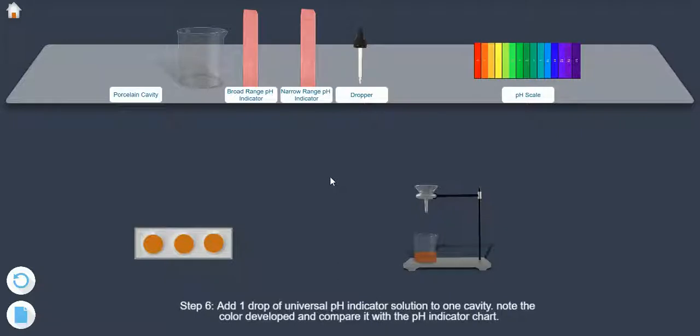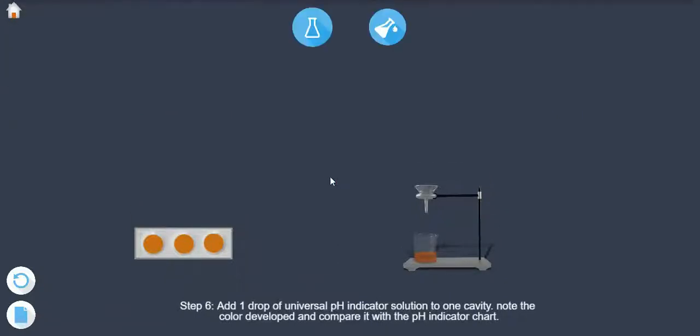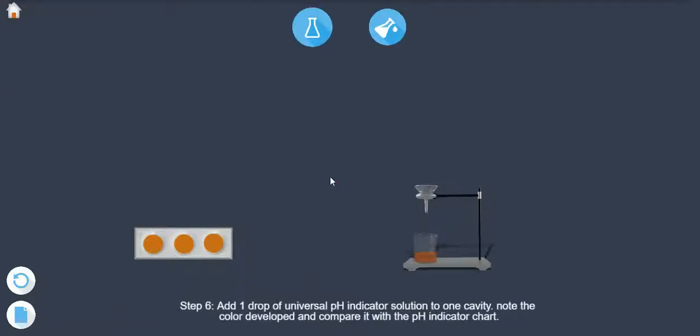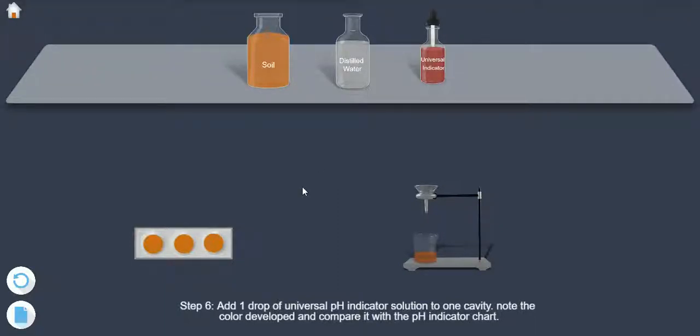Step 6: Add 1 drop of universal pH indicator solution to 1 cavity. Note the color developed and compare it with a pH indicator chart.